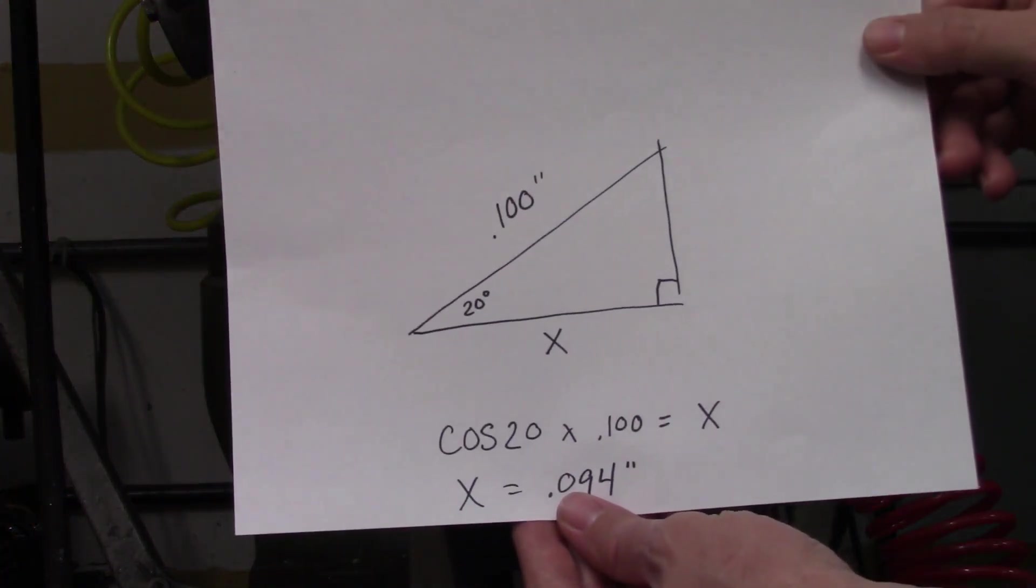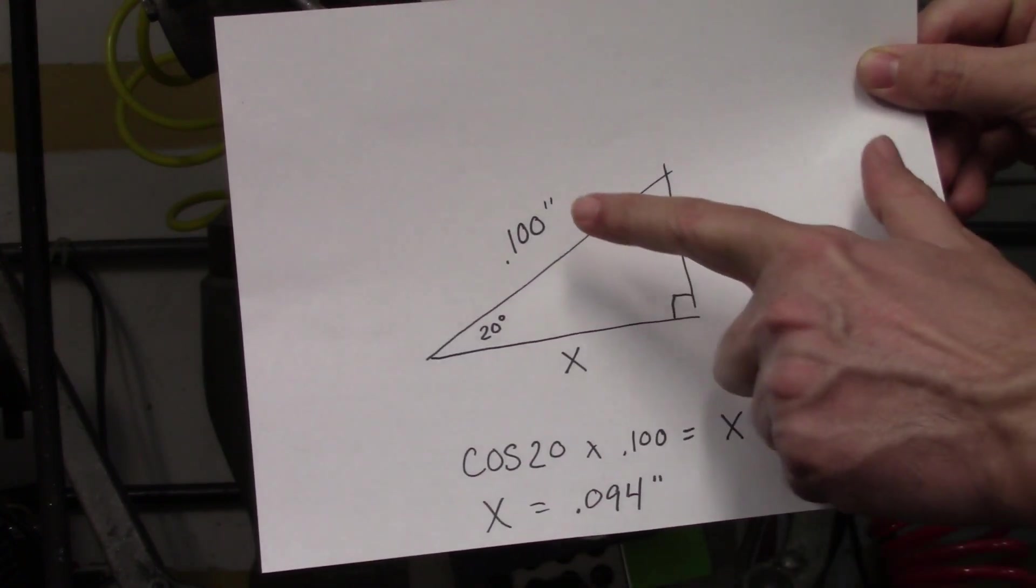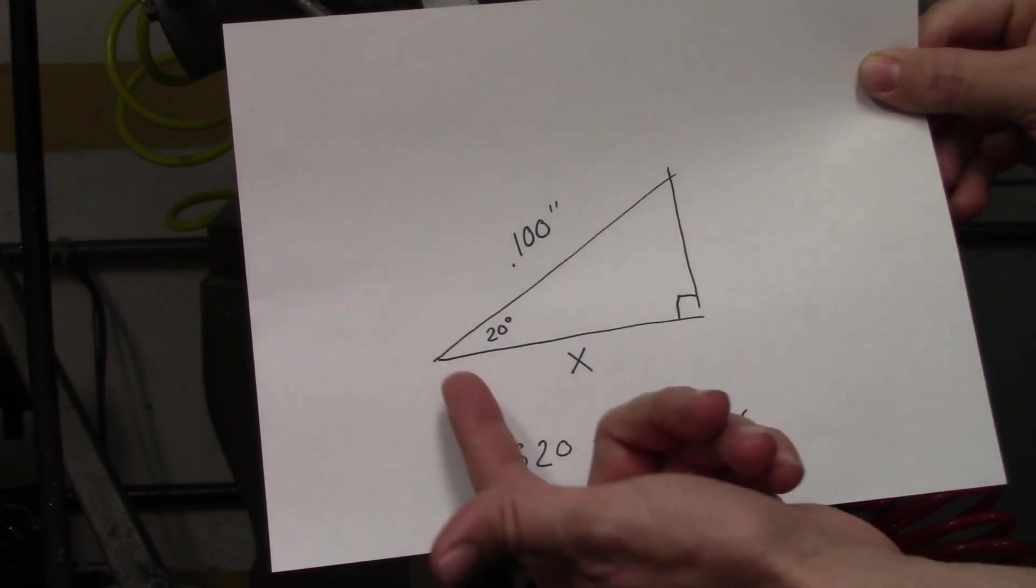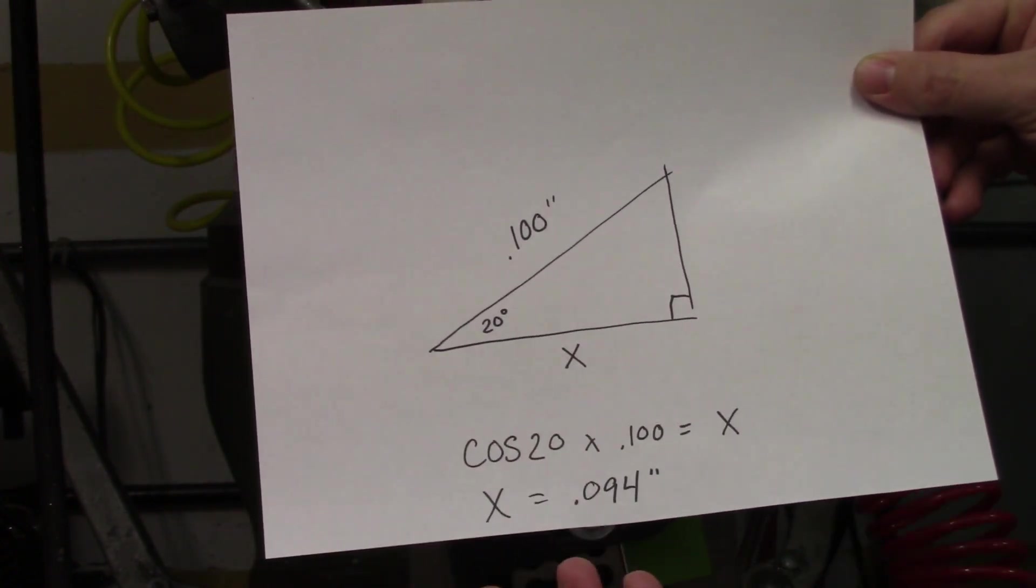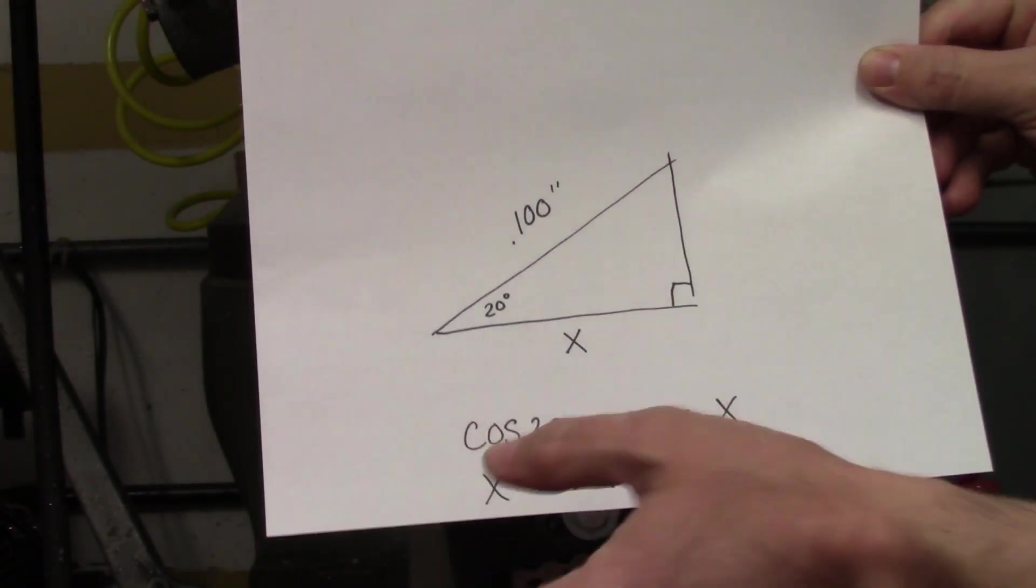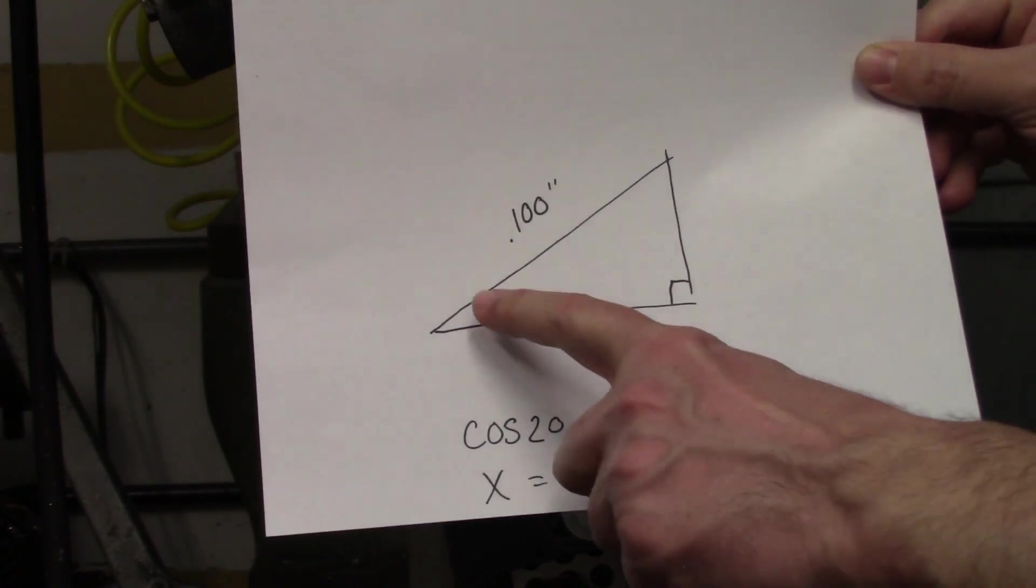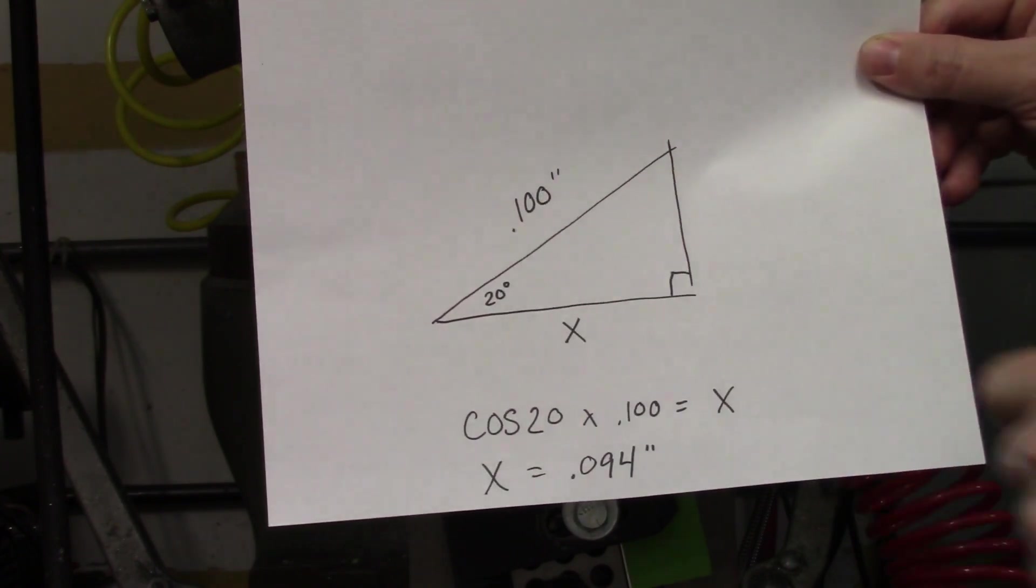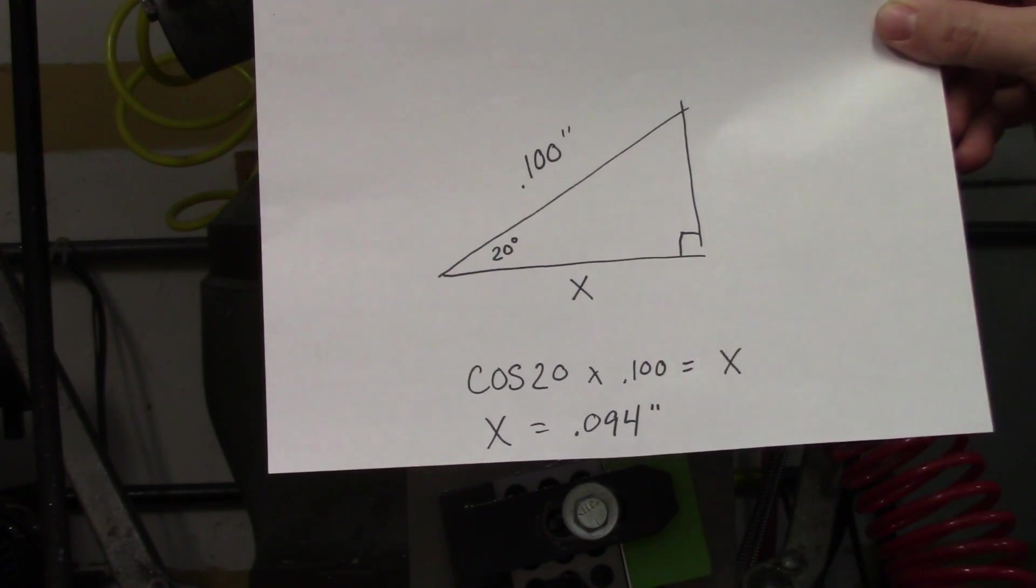I've got a triangle here with my twenty degree angle. The hypotenuse is the radius of the edge finder tip, one hundred thousandths of an inch. The lower side here is the amount that I'll need to move the table. Since I'm dealing with the adjacent side and the hypotenuse, I need to use cosine to find this. So it's cosine of twenty degrees times the length of the hypotenuse, one hundred thousandths, and that gives me a length for X of ninety-four thousandths of an inch.